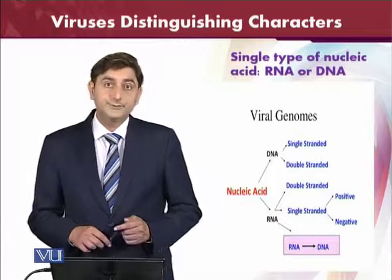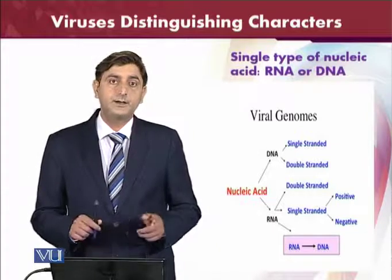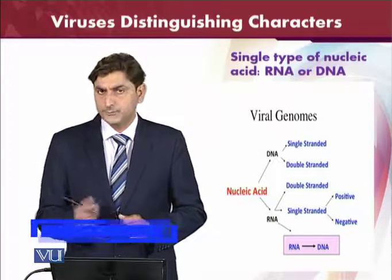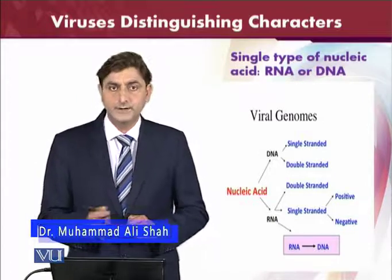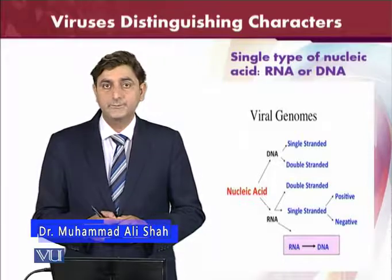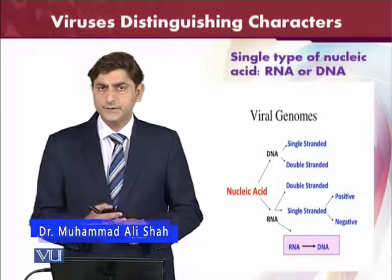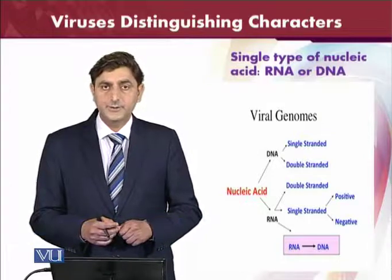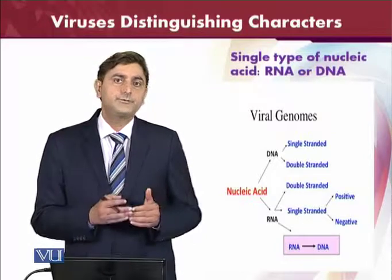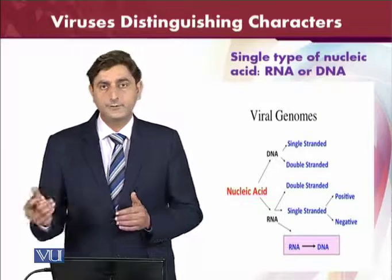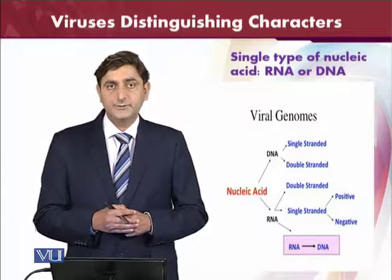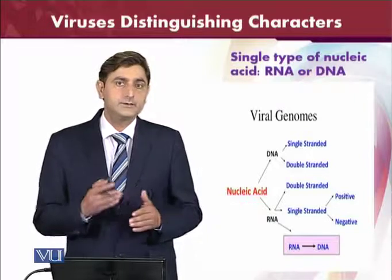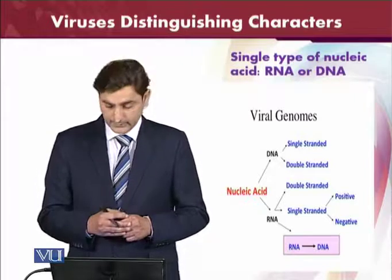The first distinguishing feature is single type of nucleic acid. Viruses are made up of just one single type of nucleic acid. There are two types of nucleic acids: one is called DNA (deoxyribonucleic acid) and the other is called RNA (ribonucleic acid). So viruses are either made up of DNA or RNA — those made up of DNA are called DNA viruses and the others are called RNA viruses.